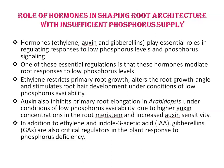Auxins also inhibit primary root elongation in Arabidopsis under conditions of low phosphorous availability due to higher auxin concentration in the root meristem and increased auxin sensitivity. In addition to ethylene and indole-3-acetic acid (IAA), gibberellins are also critical regulators in the plant response to phosphorous deficiency.